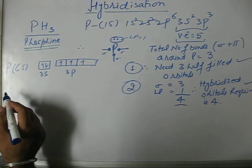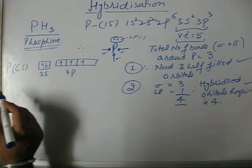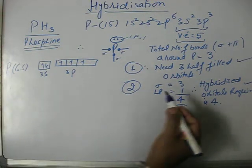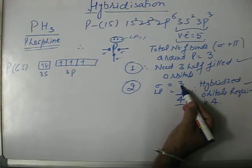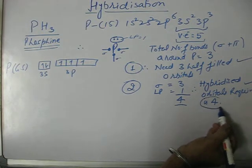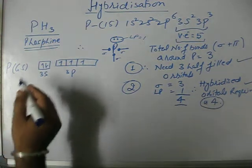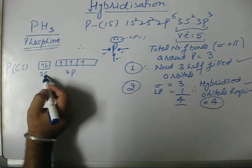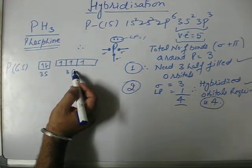The second condition: we need three sigma plus one lone pair, total four half filled orbitals. That means out of these four, one has to be s and other three are p.